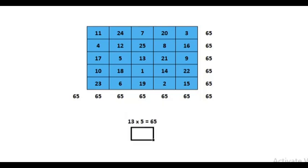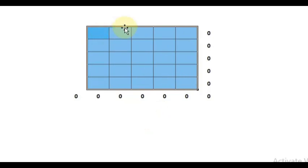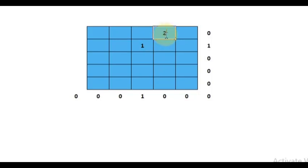Now we will construct the same magic square in a different method — this is also the Bachet de Méziriac method. This is the center number. Leave it — one number above or one number below, so we are going one number above. Put one there, then two. Then you follow the diagonal movement — mostly you will be following the diagonal method.